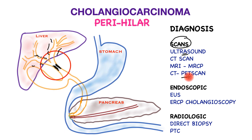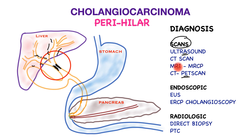CT PET scans are deployed in diagnosis as well as in detecting metastatic disease. These are two scans superimposed on each other, involving a tiny dose of radiation attached to glucose molecules which are injected into the patient and taken up by cancer cells.